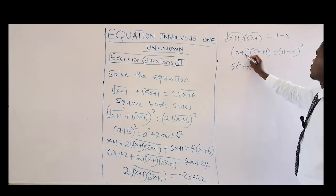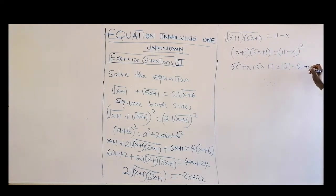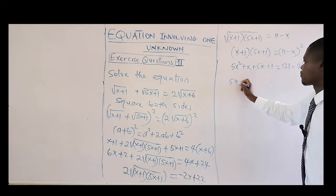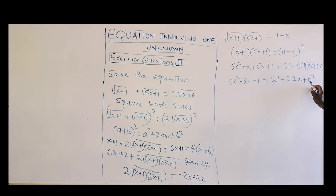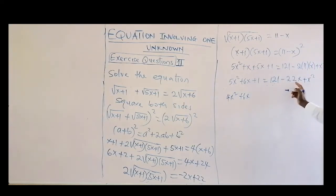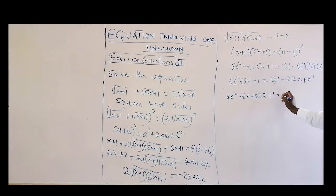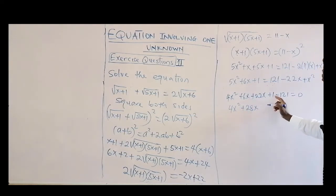Expanding the left side: 5x squared plus 6x plus 1 equals 121 minus 22x plus x squared. Bringing all terms to one side: 5x² minus x² plus 6x plus 22x plus 1 minus 121 equals zero, giving 4x squared plus 28x minus 120 equals zero.